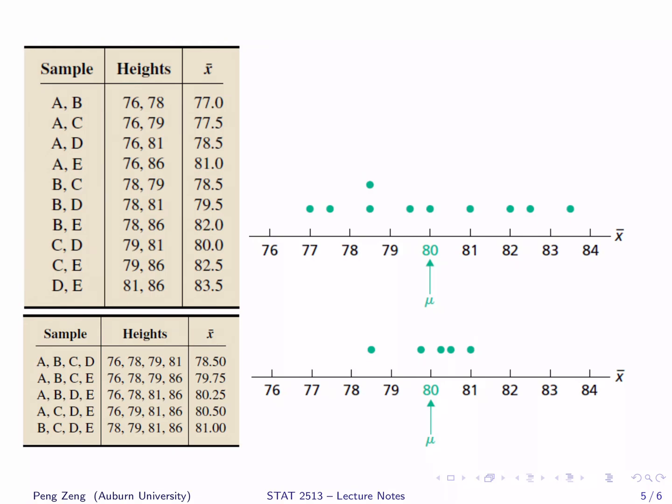Then consider samples of size 4. There are five different such samples. In the second table, we can calculate the sample mean for each sample. In the dot plot, we can find that the dots also spread around 80, the population mean. Generally, no matter what the sample size is, the sample mean x̄ spreads around the population mean μ.